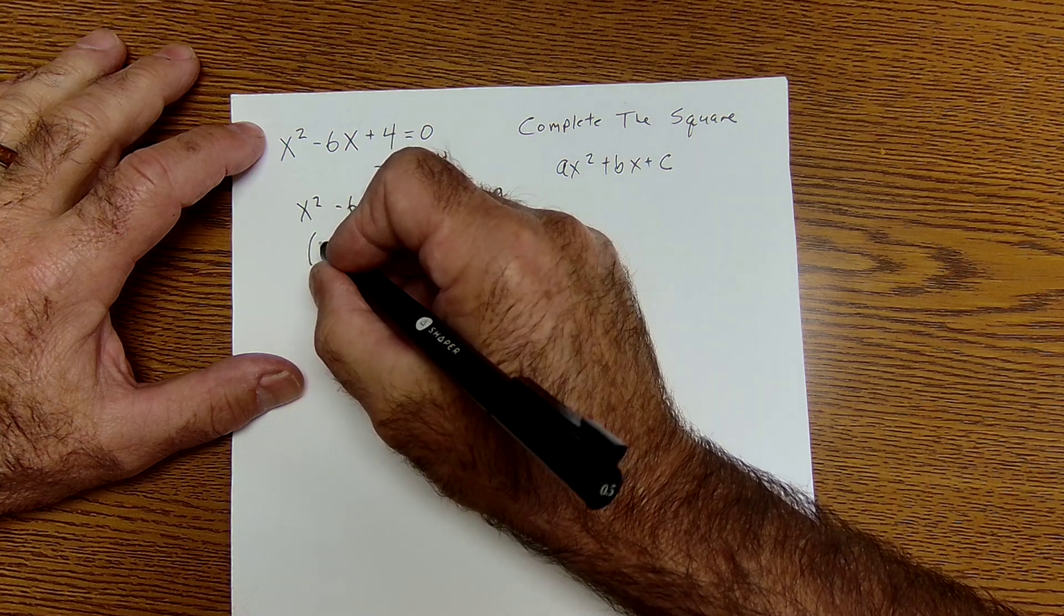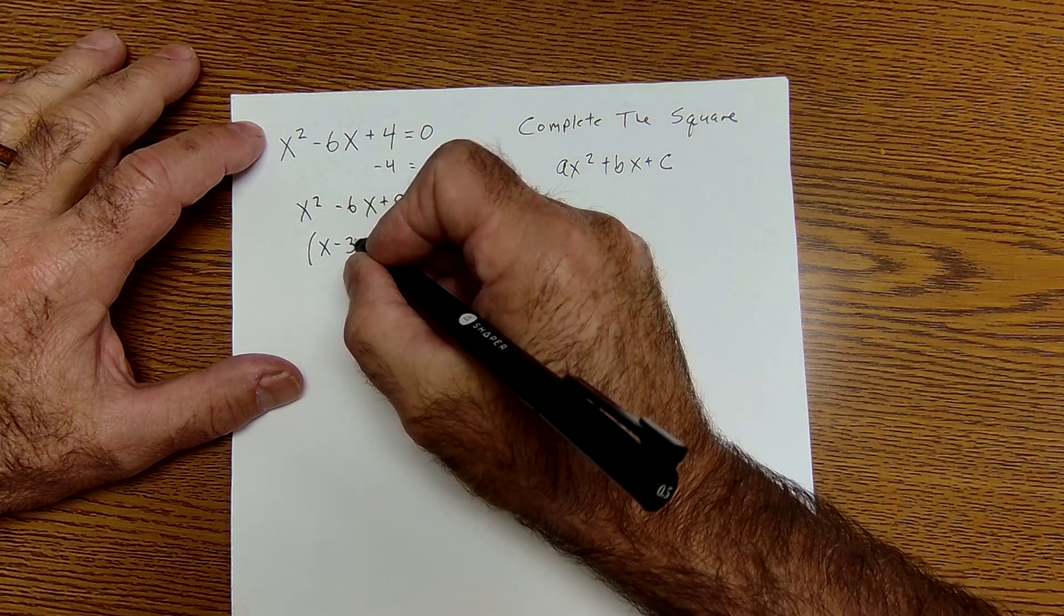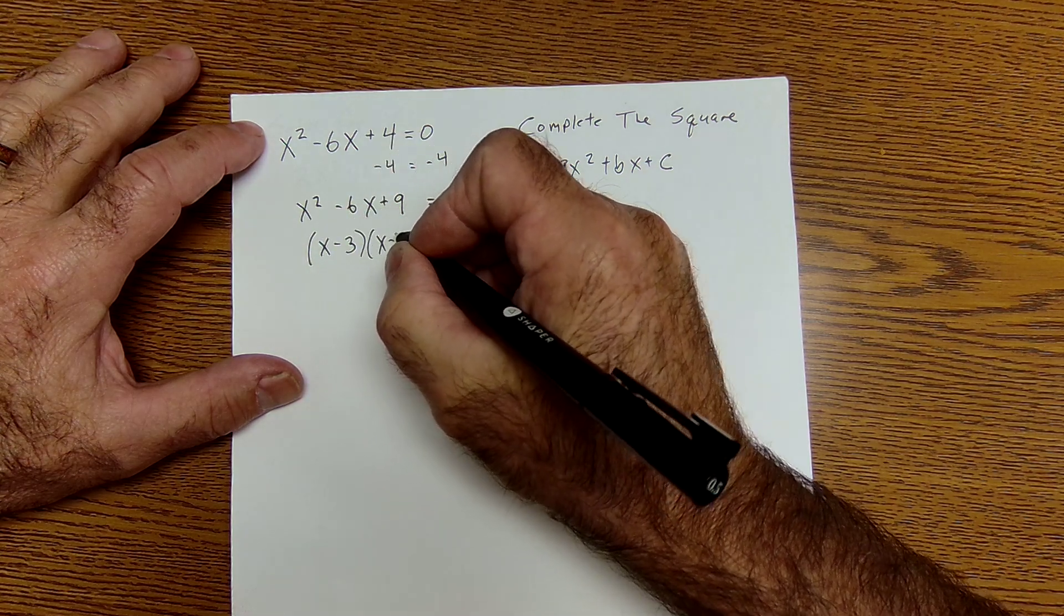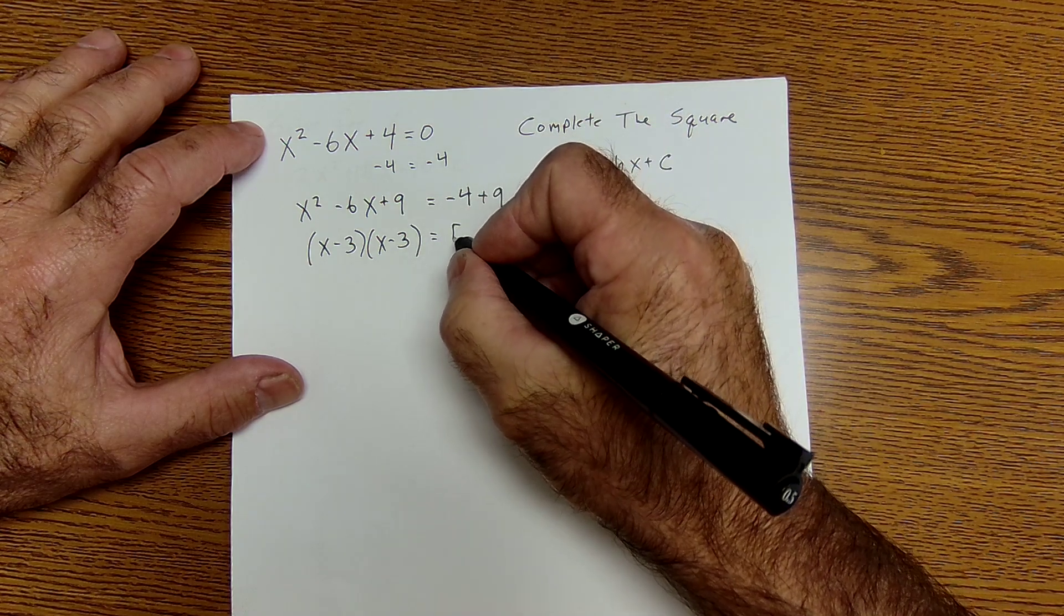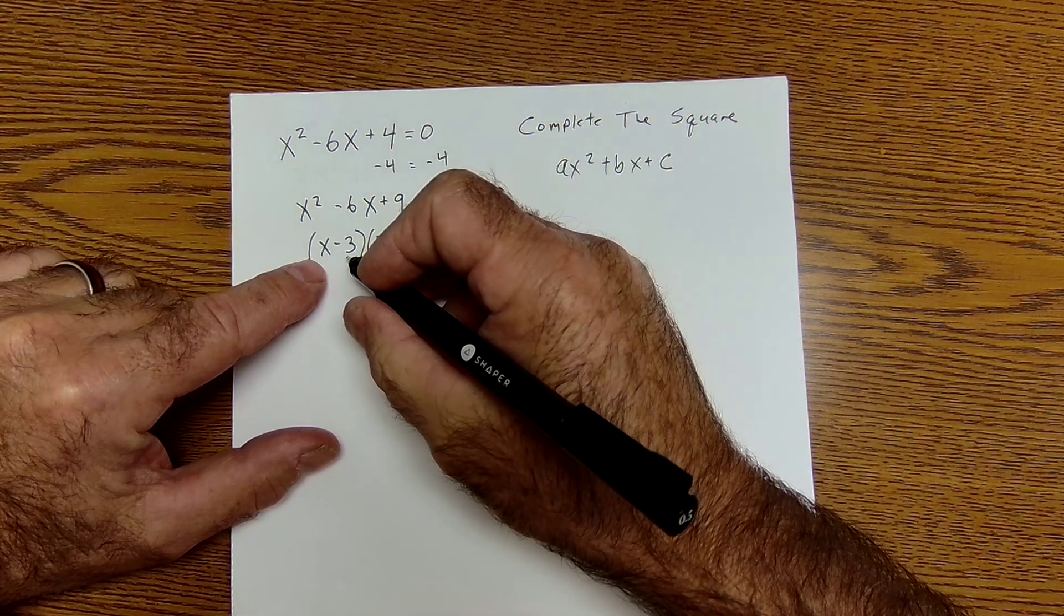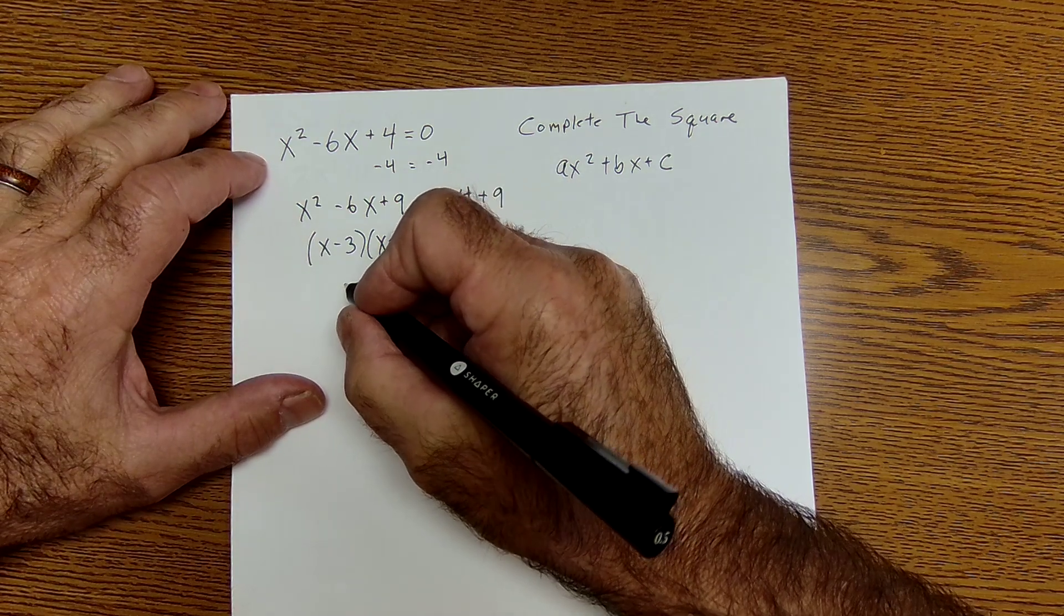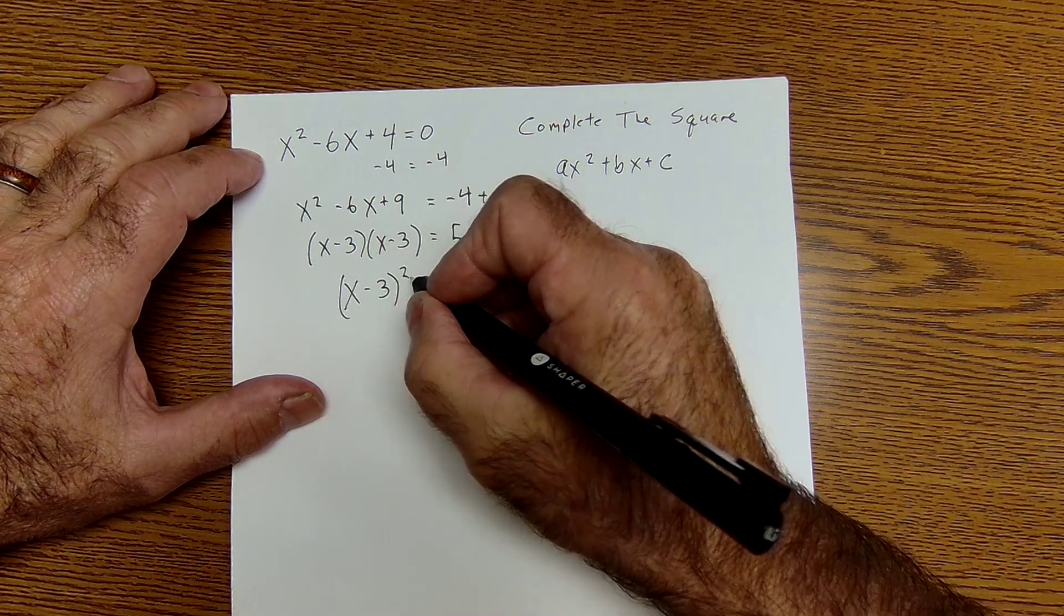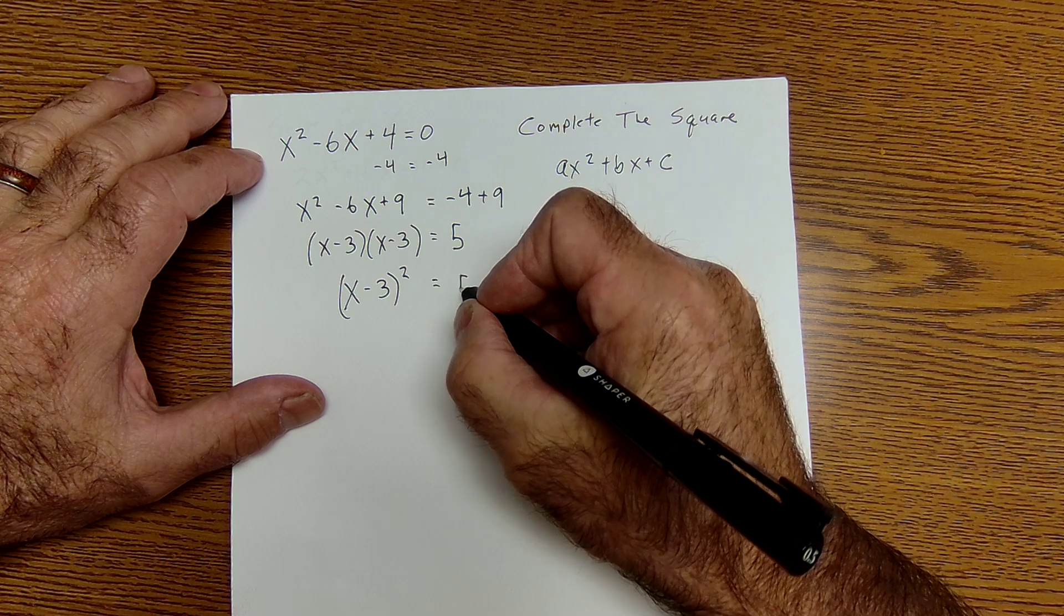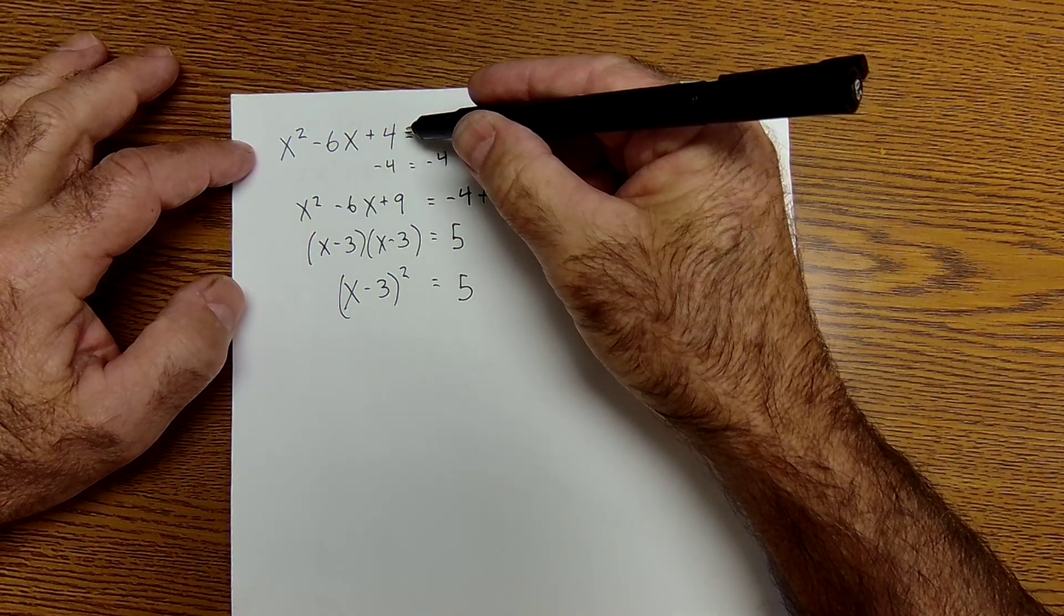Now this factors to X minus 3 times X minus 3, which equals 5. I have X minus 3 quantity squared equals 5. So even though I can't factor it,